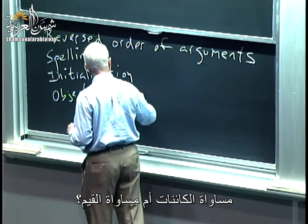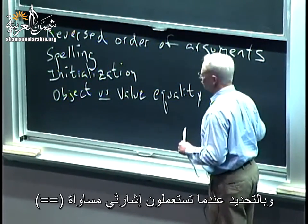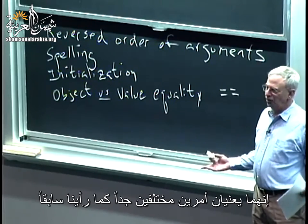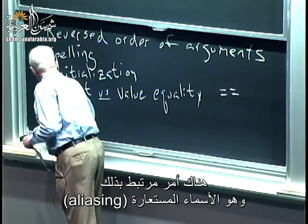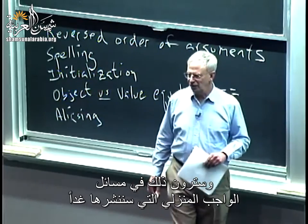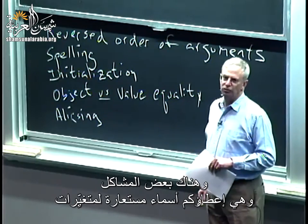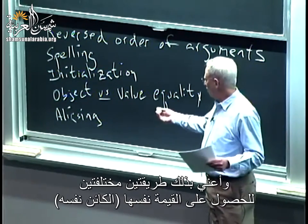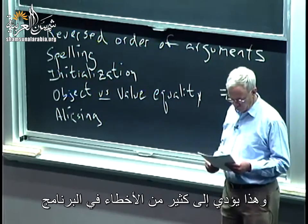Object versus value equality. Particularly when you use double equals, are you asking whether you've got the same object or the same value? They mean very different things. Related to that is aliasing — on the problem set we're posting tomorrow, there are some issues with aliasing, maybe on purpose, maybe on accident. By that I mean two different ways to get to the same object, which frequently introduces bugs.